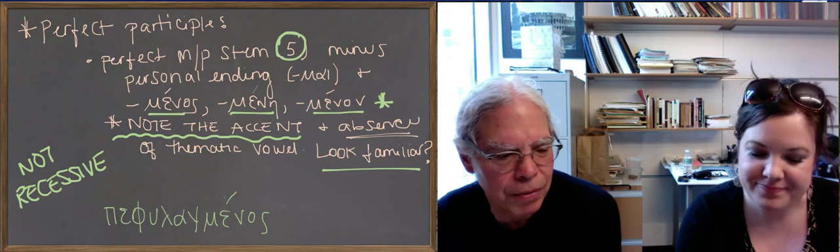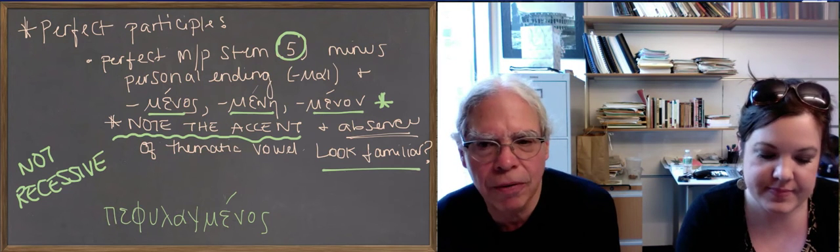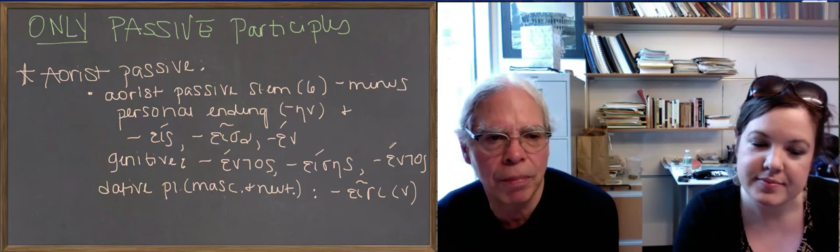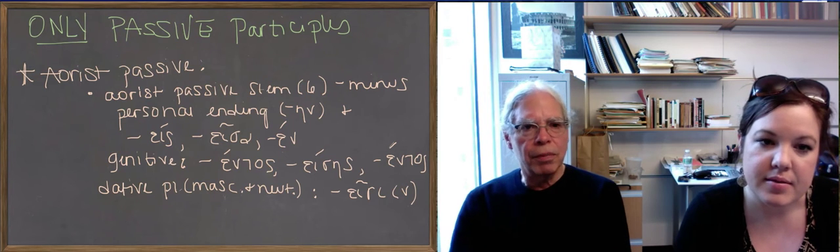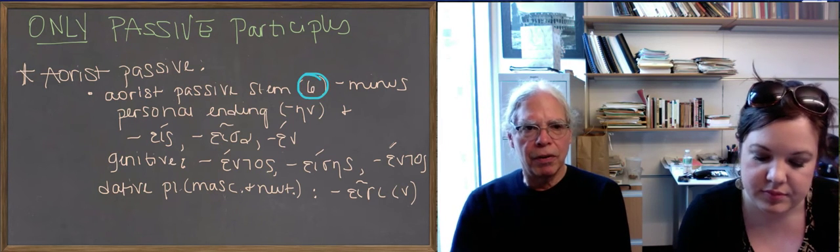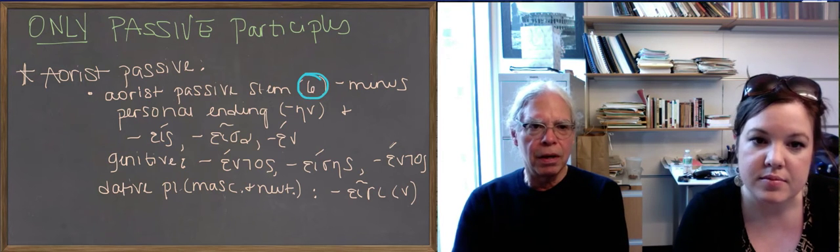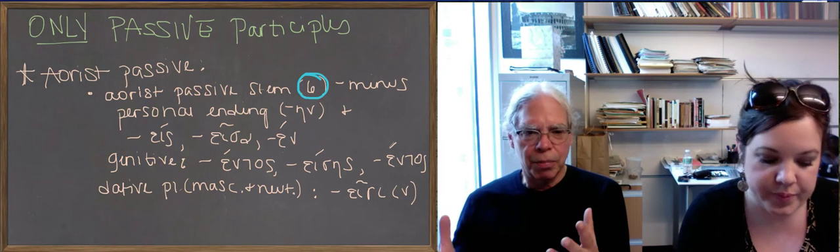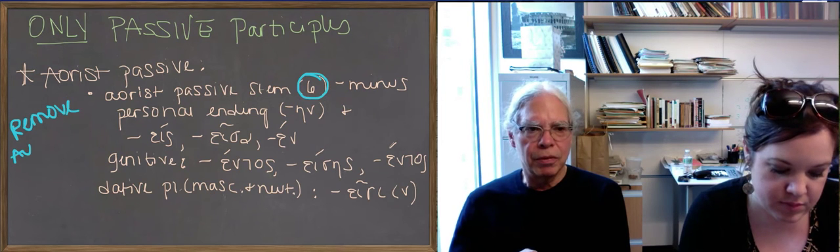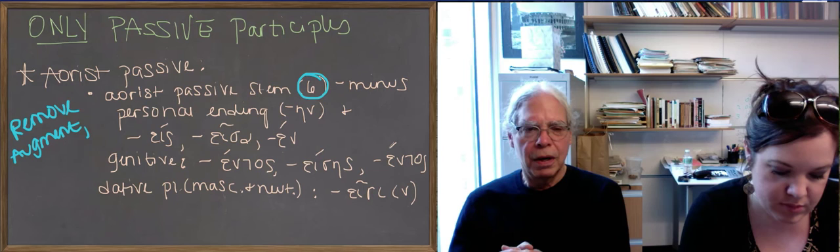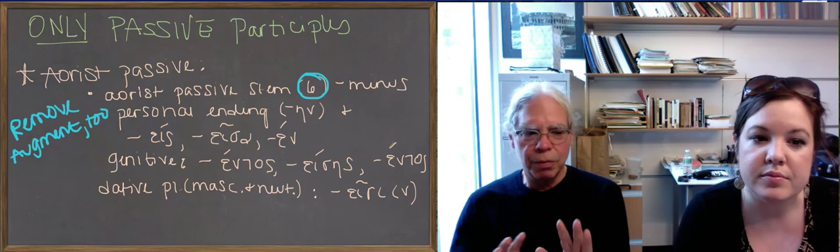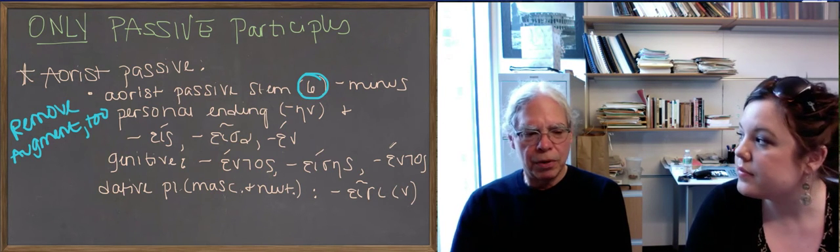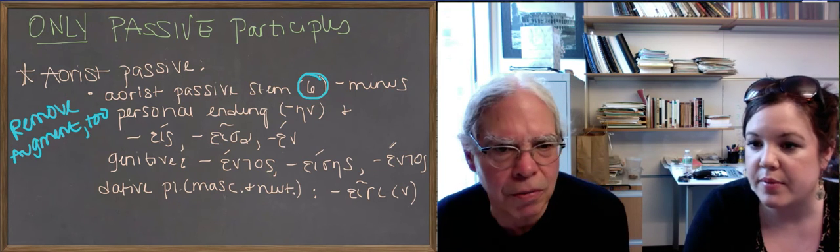Okay, good. All right, so now let's move on to participles that are only passive. And these are aorist passive and future passive. So, with these, you start with the aorist passive stem, the last stem of the verb, like eluthēn or epaideuthe̅n. We didn't say it, we didn't write it in, but you have to remove the augment, right? Because, again, participles don't have tense, they have aspect.